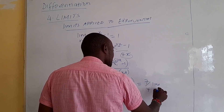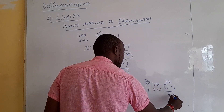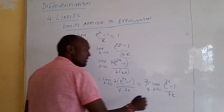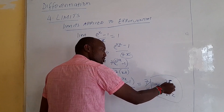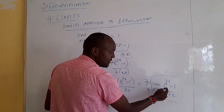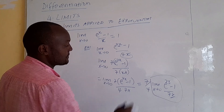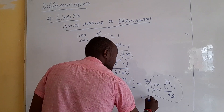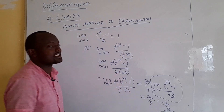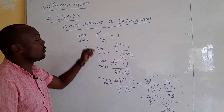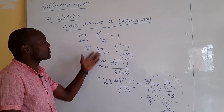We now have the limit as x approaches 0 of (e^(7x) - 1)/(7x), which matches our standard form and equals 1. So the answer is 7/4 times 1, giving us 7/4. That is how we solve limits involving exponentials.